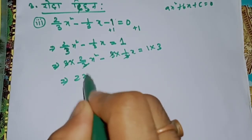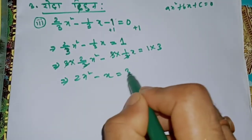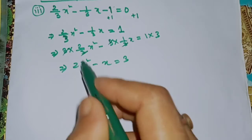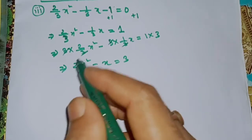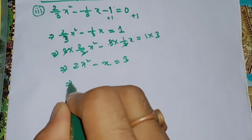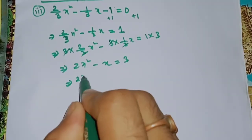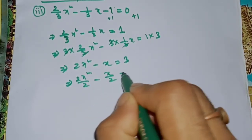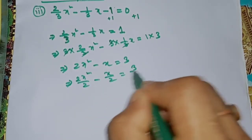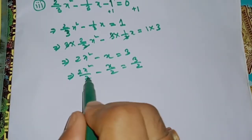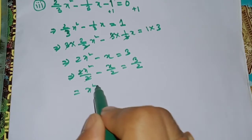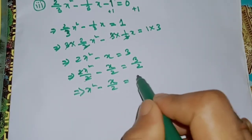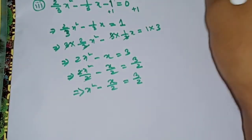x minus x is equal to 3x² is equal to 1. 3x² minus x by 2, 3 by 2.